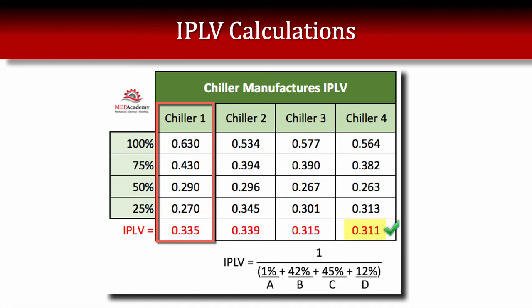So that's the Integrated Part Load Value. You can put multiple chillers into the spreadsheet and compare them.